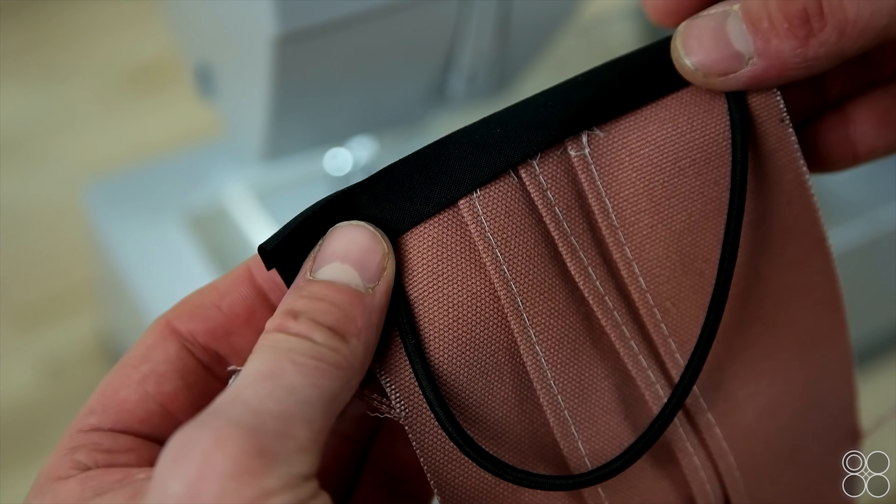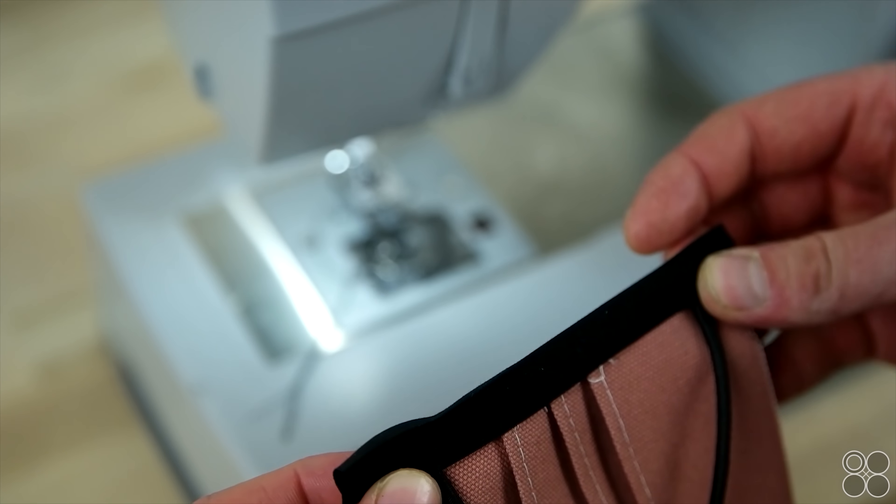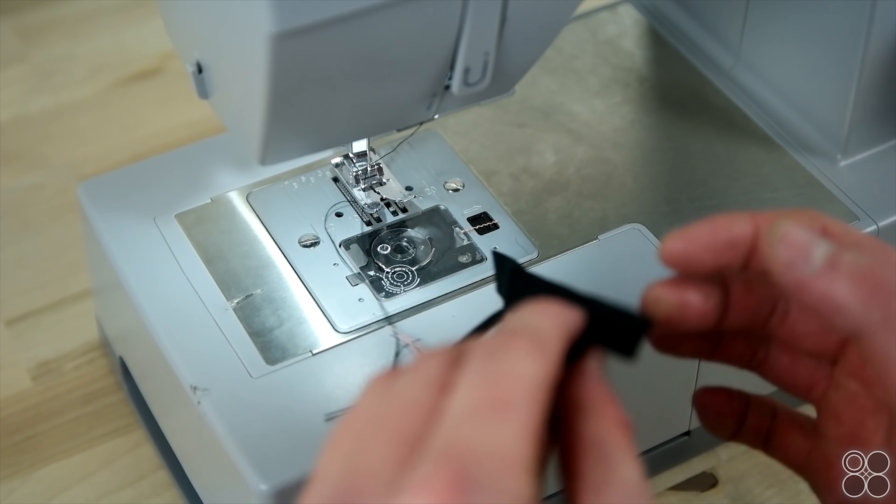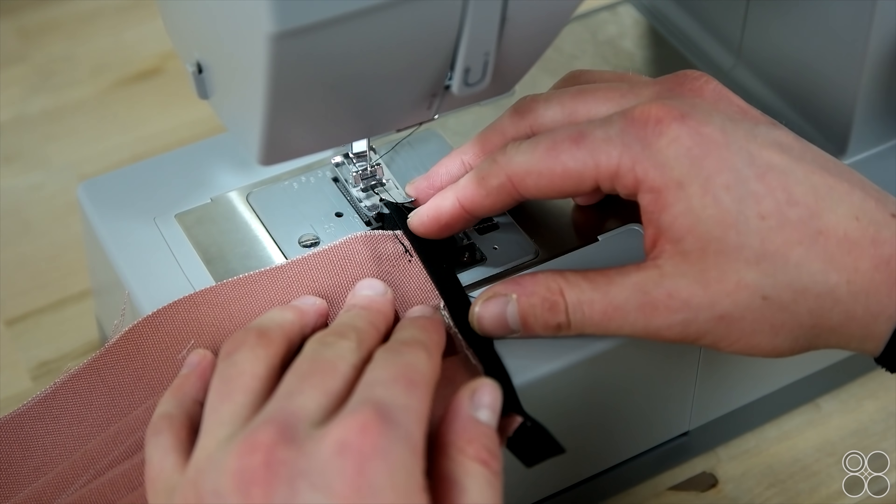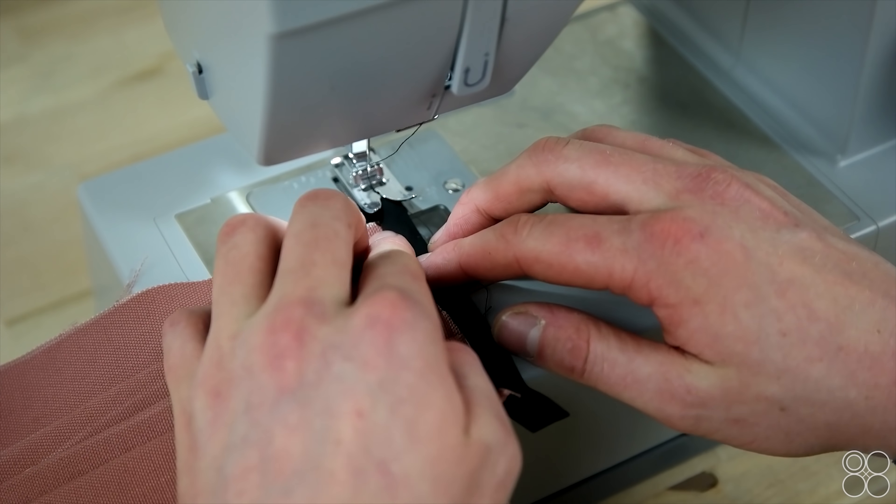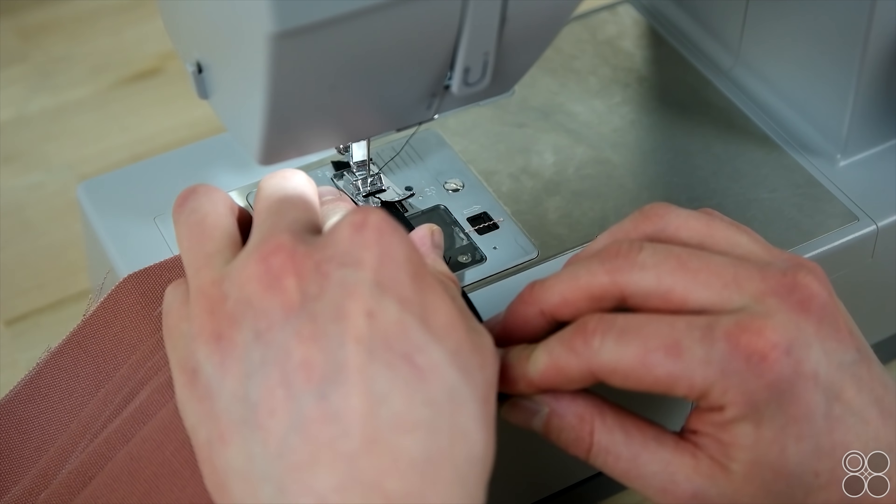So now putting on the bias tape double fold that is pre-made, it's very simple, just fold it over and sew it on. And other than that, that's pretty much all it is and you're going to do this going around. And I recommend doing both of the sides first and then trimming off the excess and then going through and sewing on the top and bottom.